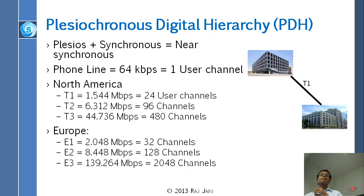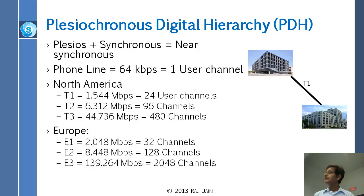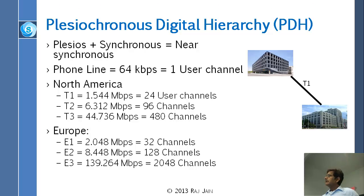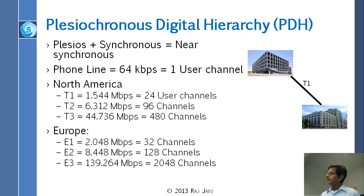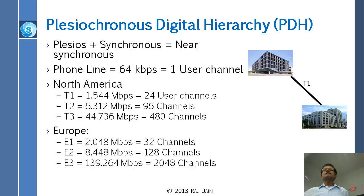Then in Europe — and this is the thing, first things start in the USA and are somewhat disorganized, but in Europe by the time they get there, they have time to think and organize it well. So they went with a different system, which is E1. E1 has 32 channels. They took 64 kilobits — their 64 kilobits is slightly different from ours, but the rate is the same. So 64 kilobits times 32 became E1, then E2, E3, and so on as powers of two. The rest of the world uses E1s; we use T1s.